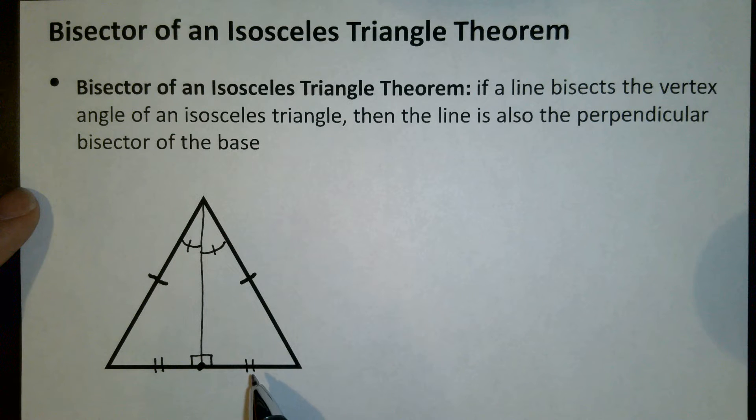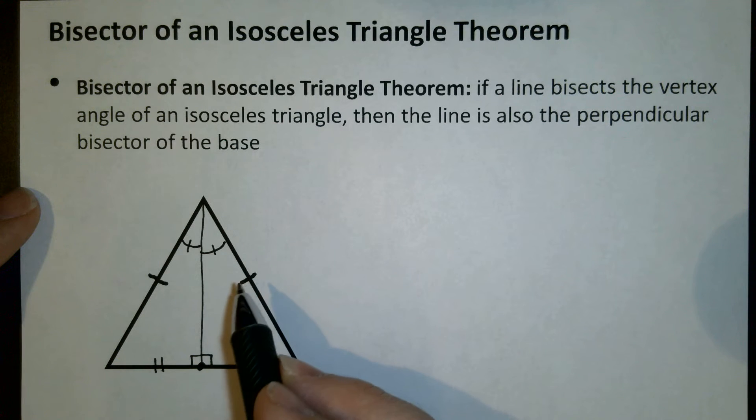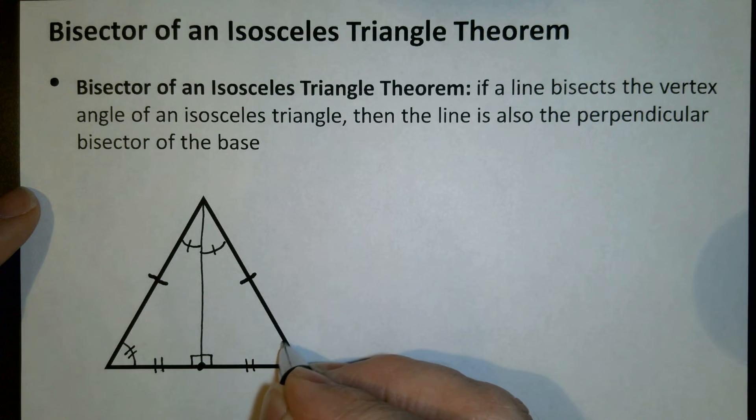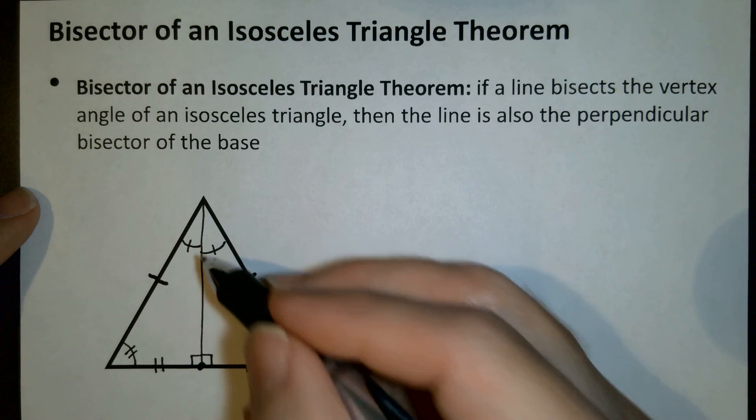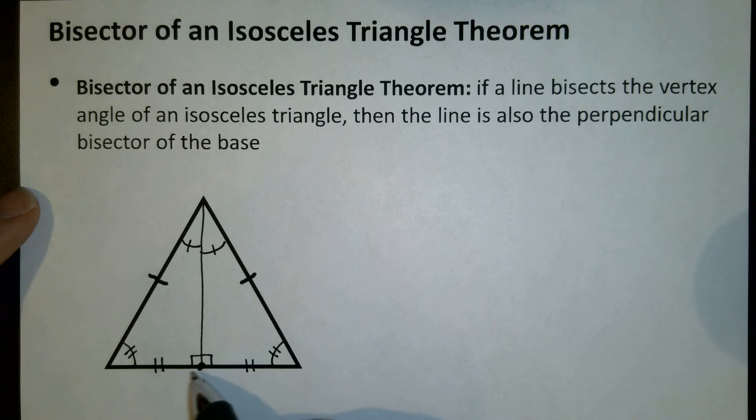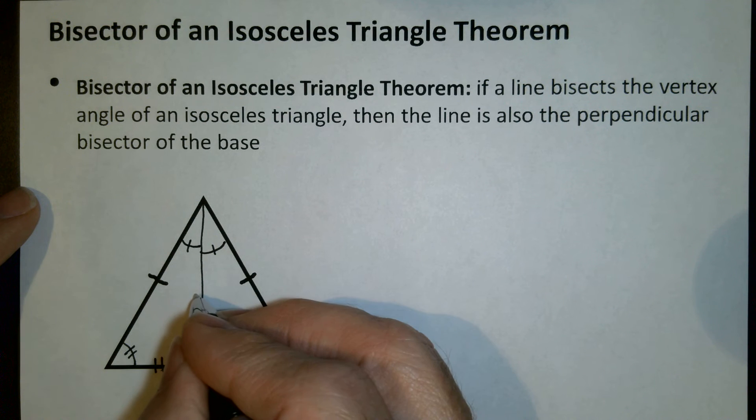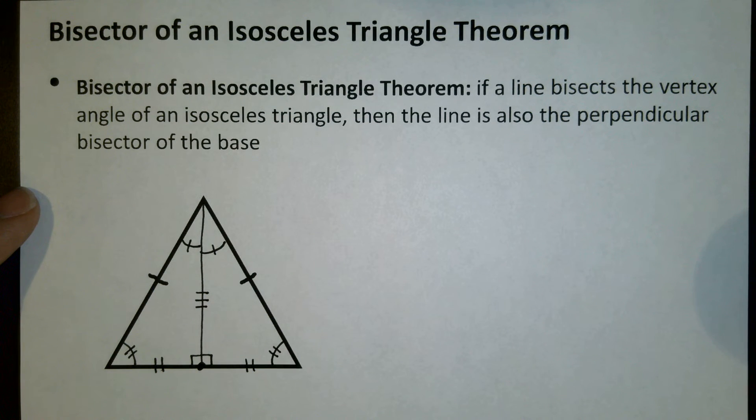But we actually know a little bit more. Because these two sides were the same, the isosceles triangle theorem says that these two angles would also be the same in the original triangle. And also this line that bisected that angle and became a perpendicular bisector of the base, it's in both sides of this triangle. So it is shared. So it's another side that's the same.